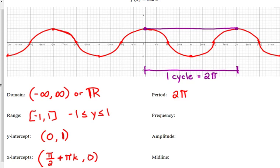So, the frequency is still 1 over the period, so 1 over 2 pi. The amplitude is still 1. From the midline to the maximum, or the midline to the minimum, is still 1. And our midline is still the x-axis, y equals 0. That does not change either.